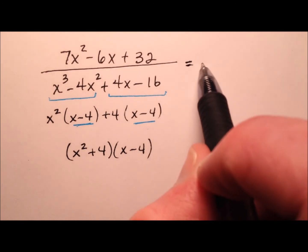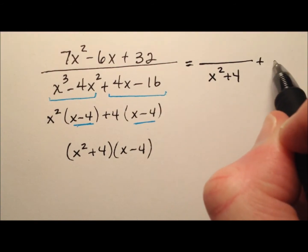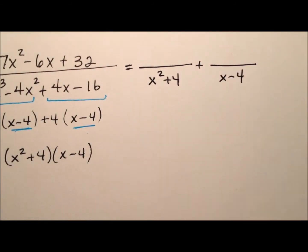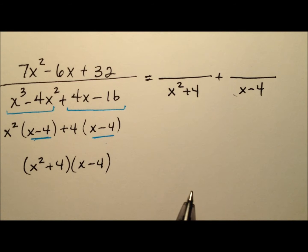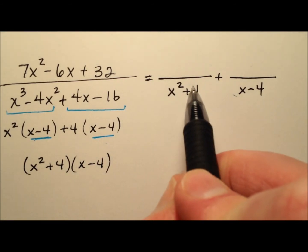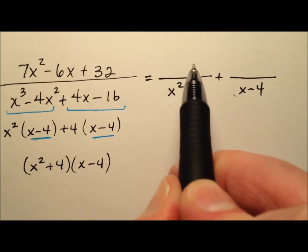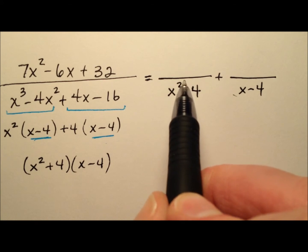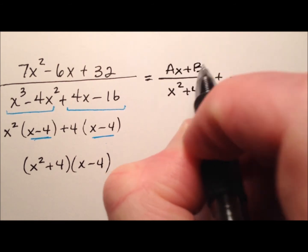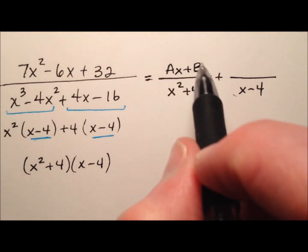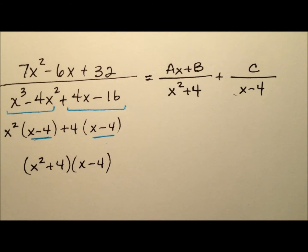So we set up the partial fractions: the first denominator is x squared plus 4, and the second is x minus 4. Since x minus 4 is linear, its numerator will just be a constant. The x squared plus 4 is quadratic, so its numerator needs to be one degree less — linear. So I'm going to put ax plus b over x squared plus 4, and because the linear denominator needs a constant, we'll call it c over x minus 4.